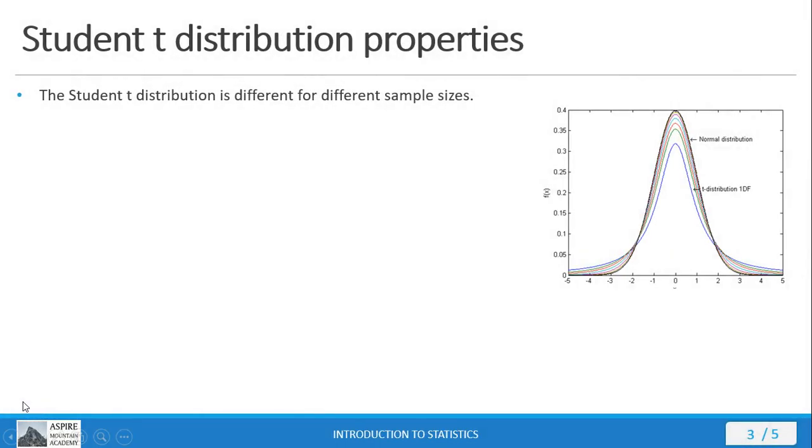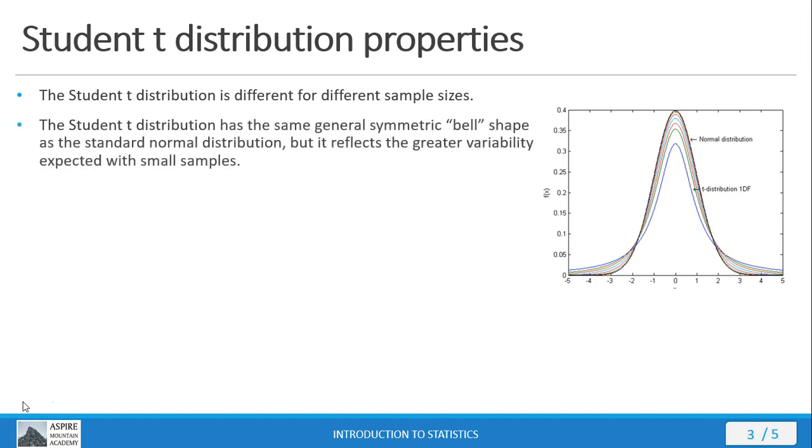Let's look at some of the properties for the student t-distribution. So it actually is slightly different in shape for different sample sizes. Like the normal distribution, the student t-distribution has the same general symmetric bell shape. But with smaller sizes, it's going to reflect greater variability. So you can see here in the graphic here on the right, how you've got different t-distributions for different sample sizes.